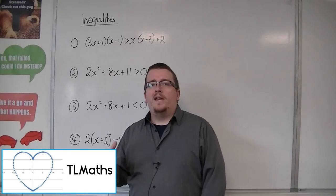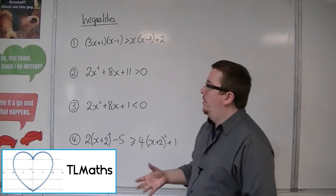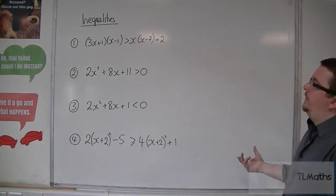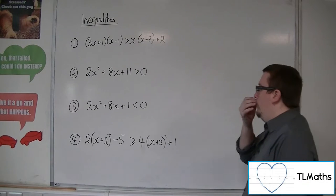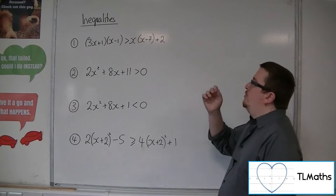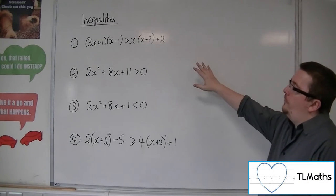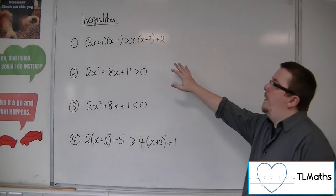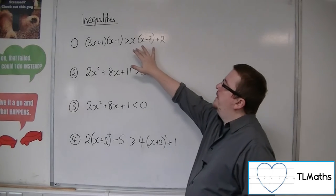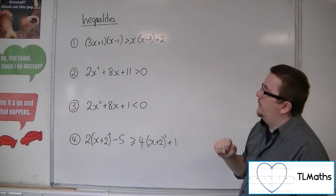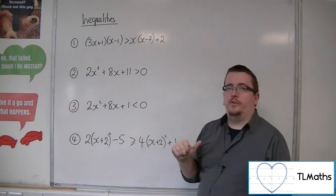In this video we're going to be looking at more complicated quadratic inequalities. For the first one, we've got 3x plus 1, x minus 1, is greater than x times x minus 7, plus 2.